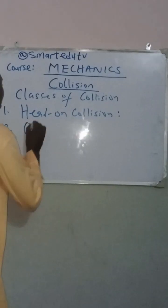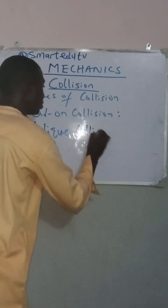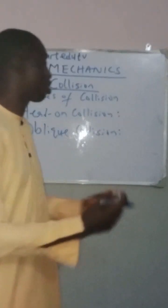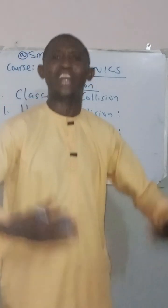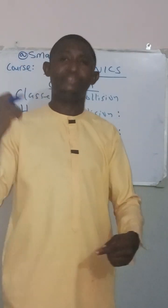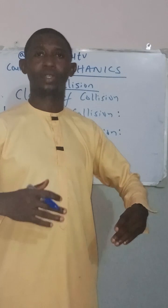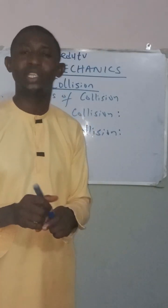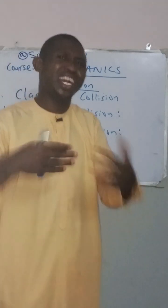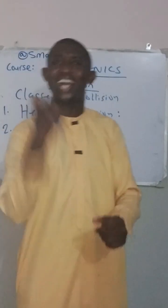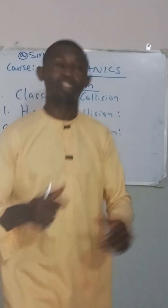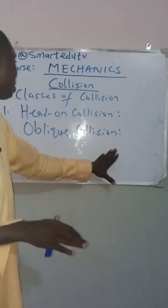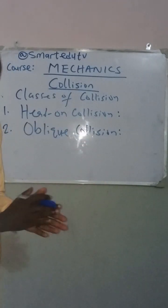The second class is oblique collision. This is the class of collision in which when two bodies collide together, one of the bodies maintains the same line of action while the other body falls off from that line of action. For instance, when two cars collide on a bridge such that one car still remains on the bridge while the other car fell off — that is oblique collision. So the two classes of collision are head-on collision and oblique collision.